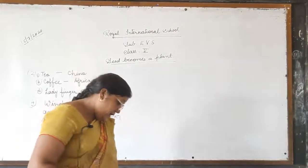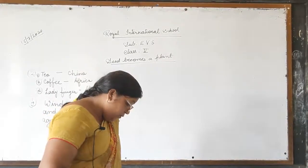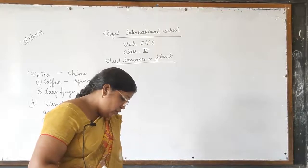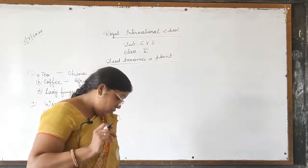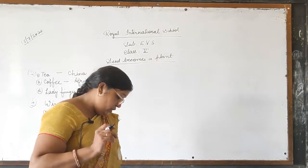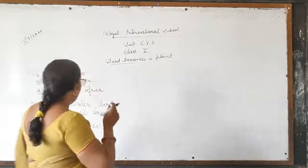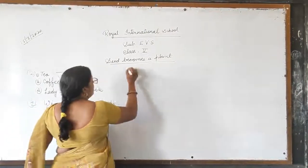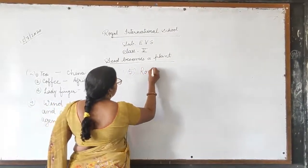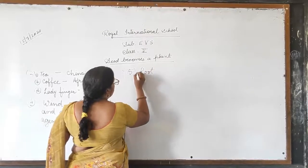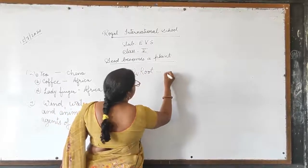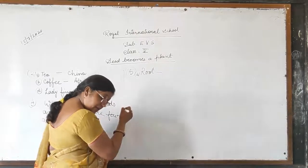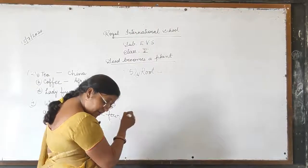Next question: name two plants each that reproduce through root, underground stem, and spores. Fifth question — for root, the answers are sweet potato and carrot.